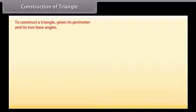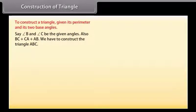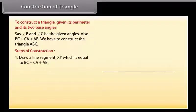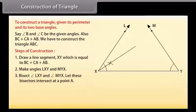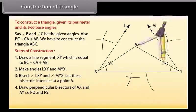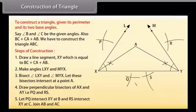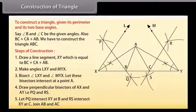Now we will construct a triangle given its perimeter and its two base angles, say angle B and angle C, where BC plus CA plus AB is the perimeter. Steps of construction: draw a line segment XY equal to BC plus CA plus AB. Make angles LXY and MYX equal to the given angles. Bisect angle LXY and angle MYX and let these bisectors intersect at point A. Draw perpendicular bisectors PQ of AX and RS of AY. Let PQ intersect XY at B and RS intersect XY at C. Join AB and AC. Then ABC is the required triangle.